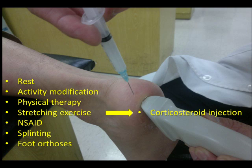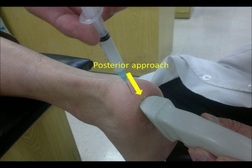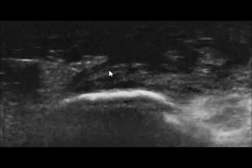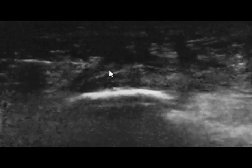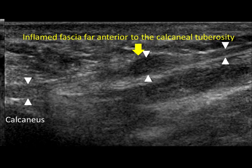Ultrasound-guided corticosteroid injection has been reported to improve therapeutic efficacy by localizing the lesion and placing the needle precisely. The injection is best performed with the patient prone, just like the position for plantar fascia examination. The needle can be inserted by a posterior approach or a medial approach. Most recommend the posterior approach, which allows easier access to the posterior fascia region. After skin preparation, the needle is introduced along the long axis plane of the probe. The echogenic metallic needle can be easily identified on ultrasound. A 21 or 23 gauge long needle is preferred because the lesion can be more anterior to the calcaneal tuberosity. If the lesion is far anterior, a medial approach is preferred.